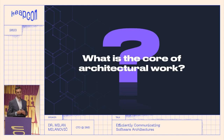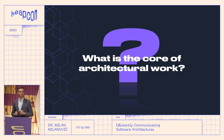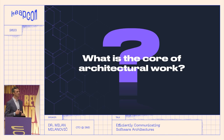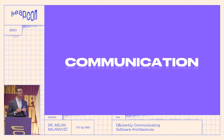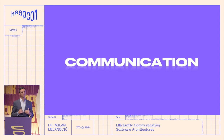But what is at the core of architectural work? Is it some architectural patterns, styles, maybe which technology we choose, or something else? I would say it's communication. The most important job of every software architect is communication. The best architects I worked with are not the people who know technology the best, but the best communicators — master communicators. Without good communication, you cannot have good architectures.